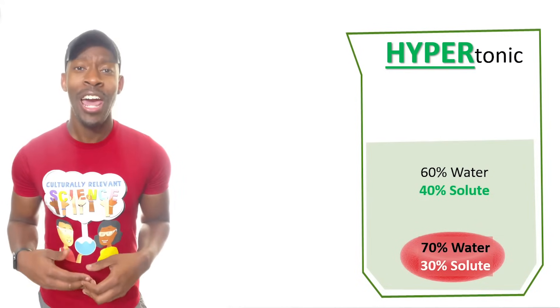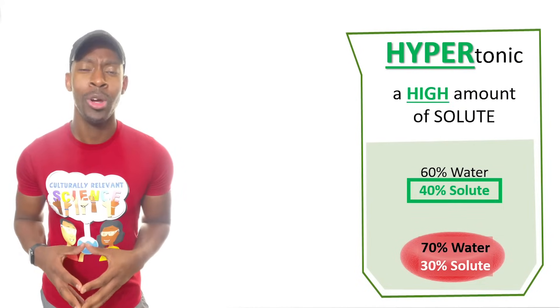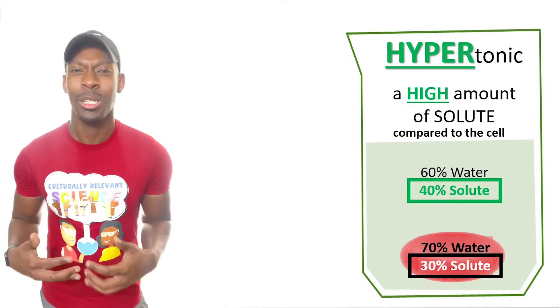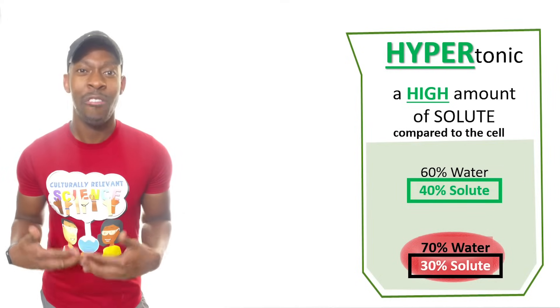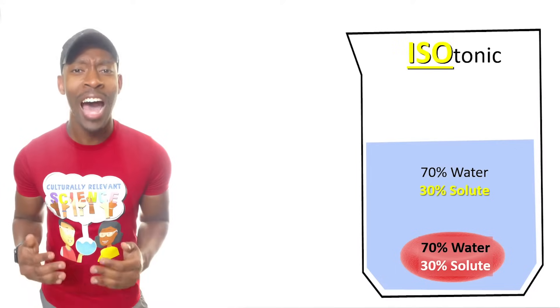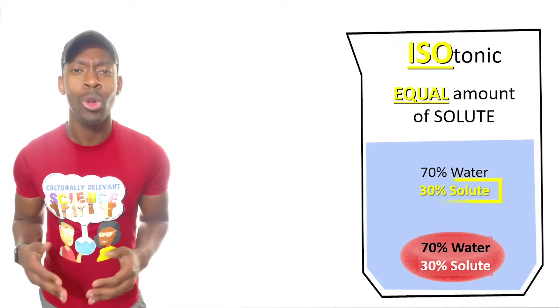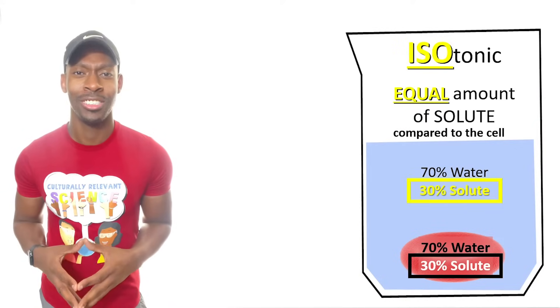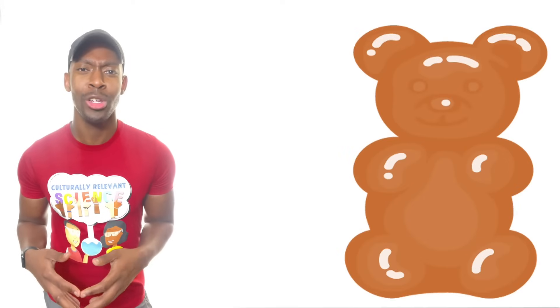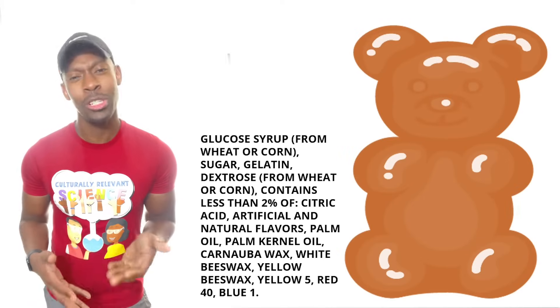Hypertonic if it has a higher amount of solute compared to the cell, like someone that has a lot of energy, very hyper. And a solution is isotonic if it has an equal amount of solutes on both sides. Gummy bears are made of a good amount of solutes dissolved into water, and we've summarized them here: 80% water, 20% solutes.